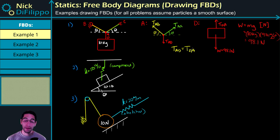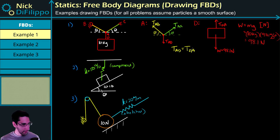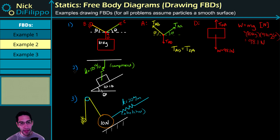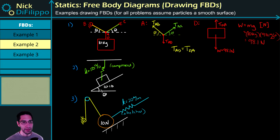Let's look at example two. Here we have a block that is connected to a spring that is compressed, and it's sitting on an incline. Let's draw the free body diagram of this block.